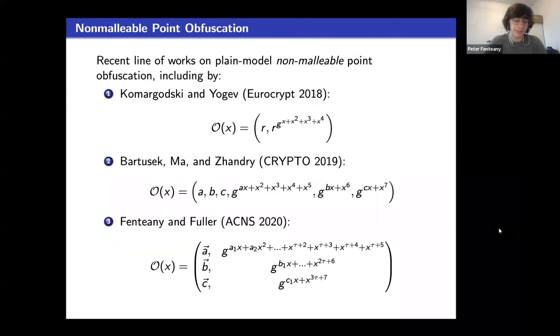There's been much effort in recent years on Plain Model non-malleable point obfuscation. This line of work was initiated by Komargotsky and Myoga. However, none of these works are actually sufficient for constructing entirely non-malleable digital lockers, i.e. point function obfuscations with multibit output. However, we do use assumptions that are rooted in Bardasek-Mann-Zandry's Crypto 2019 paper, which they introduce and justify there.